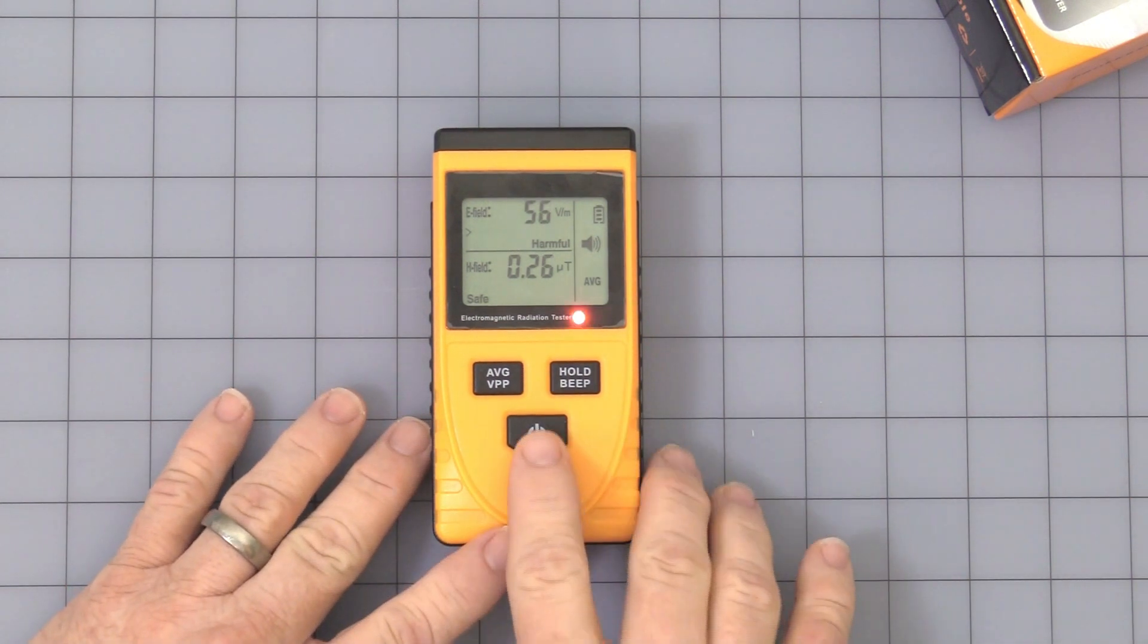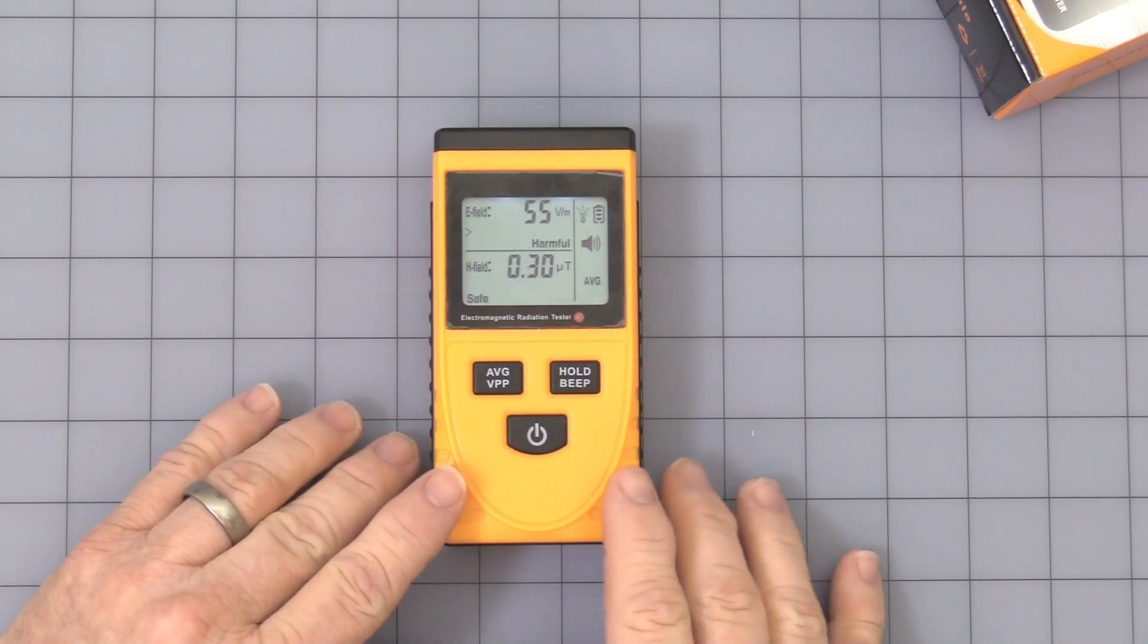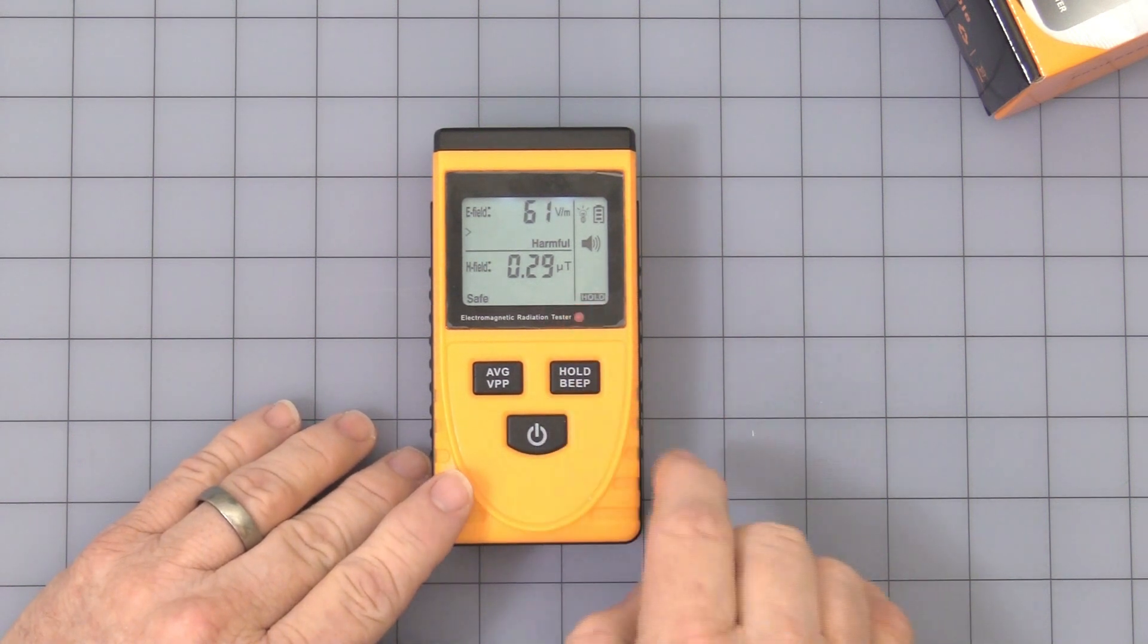As it's operating, you can press the on button again quickly to turn on the backlight—it's only on for a short period of time. You can also press the hold button and press again to release.